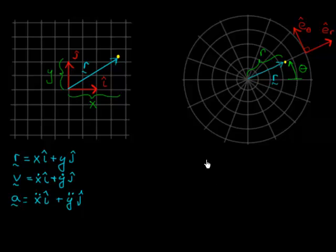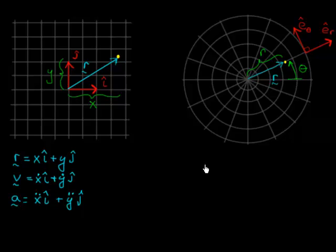We've already had a couple of videos in which we derived equations for velocity and acceleration in polar coordinates. But in those videos we did it intuitively, based upon thought experiments and some simulations. Now I'd like to derive those expressions rigorously, mathematically, using the definition of a derivative.